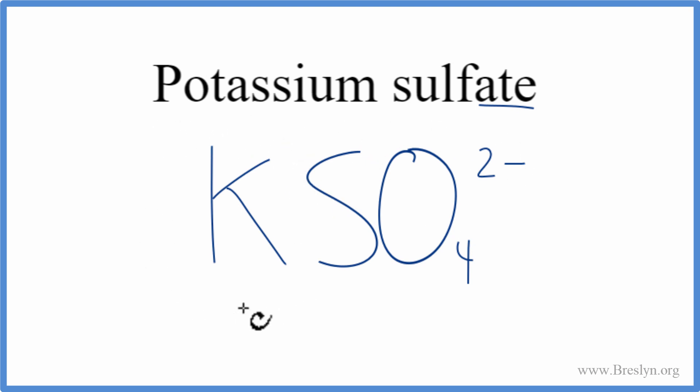When we look at the periodic table, potassium's in group 1, so it has a 1 plus ionic charge. We said the sulfate, when we looked it up, that had a 2 minus charge. So these don't add up to zero right now. But we can change the subscripts to make it happen.